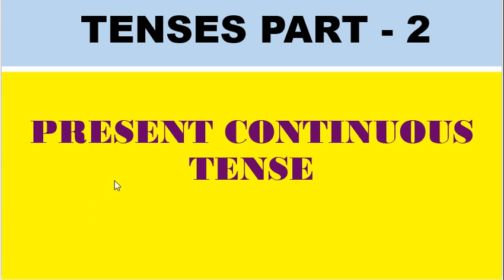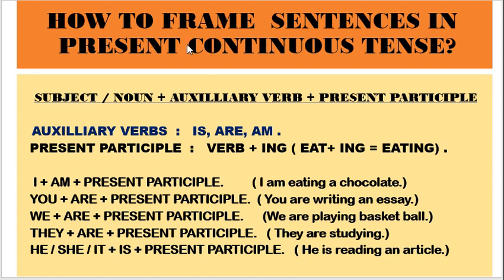Let us now begin with present continuous tense. How should we frame a sentence using present continuous tense? We need to remember that subject or noun, then there will be an auxiliary verb, and then we have to use the present participle form of the verb. Now let us try to understand subject or noun first.